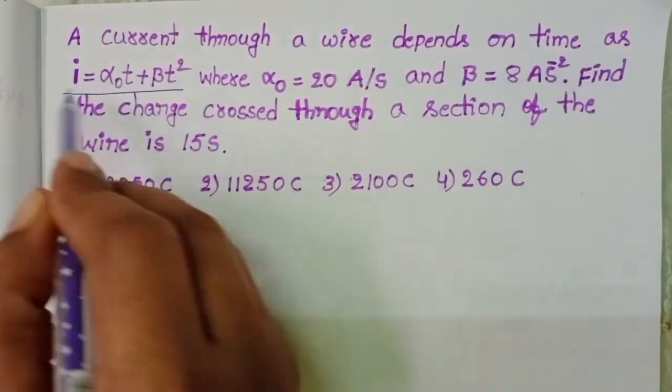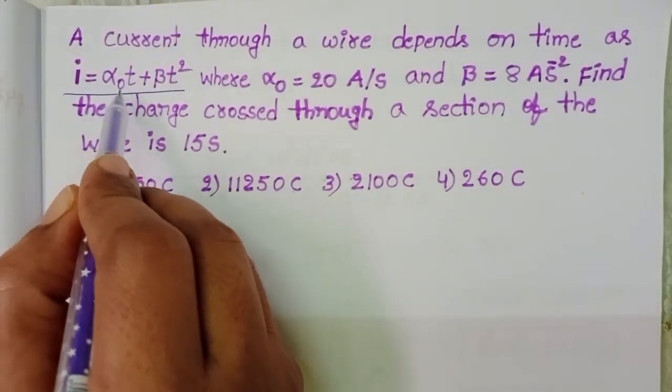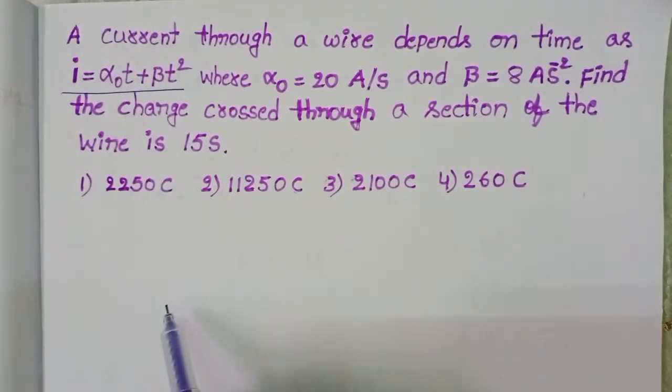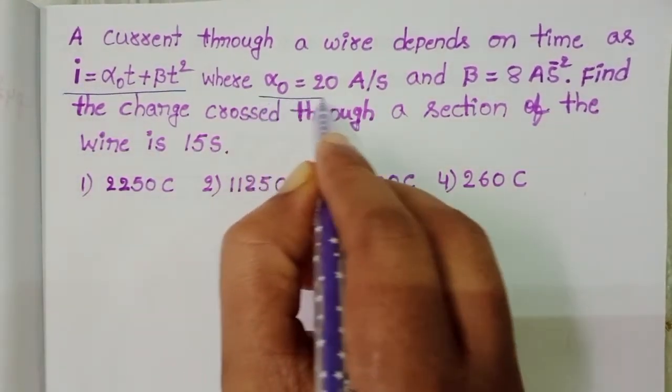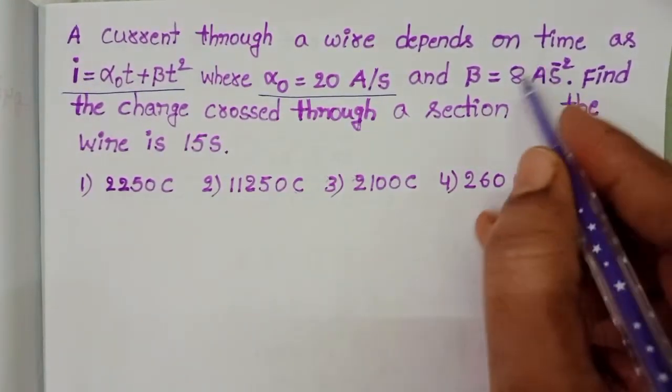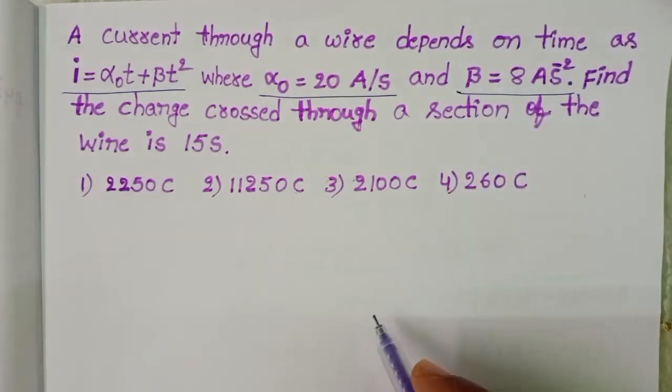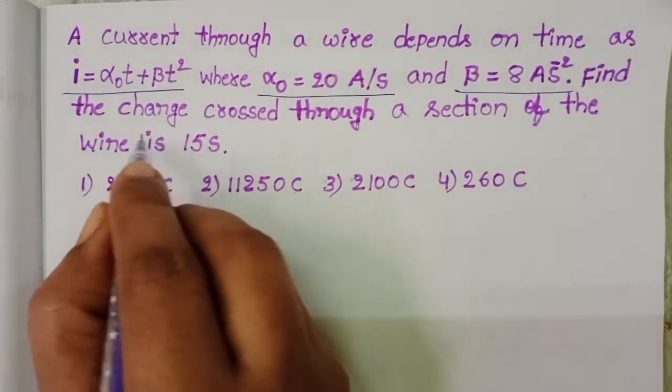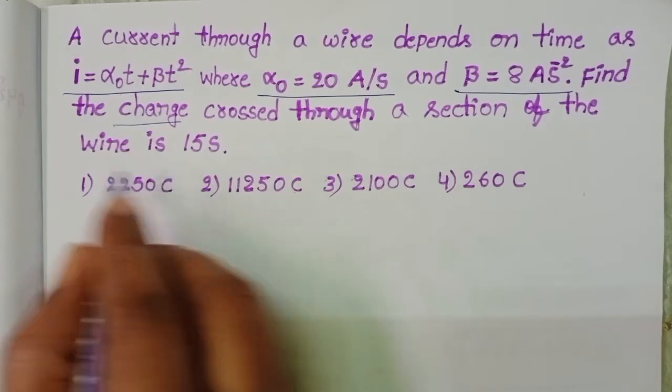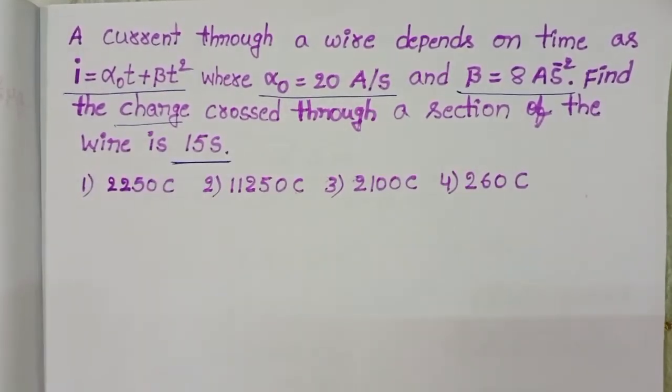Current through a wire depends on time as I equals α₀t plus βt squared, where α₀ is 20 amperes per second and β is 8 amperes per second squared. Find the charge crossed through a section of the wire in 15 seconds.